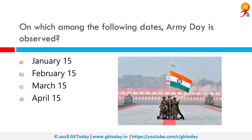On which date is Army Day observed? The Indian Army Day is celebrated on 15th January every year. It is celebrated in recognition of Lieutenant General K.M. Kariappa, who took over as the first Commander-in-Chief of the Indian Army from General Sir Francis Bucher, the last British Commander-in-Chief of India, on January 15th, 1949.